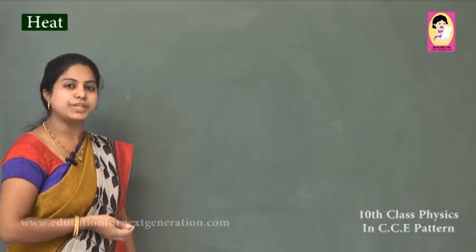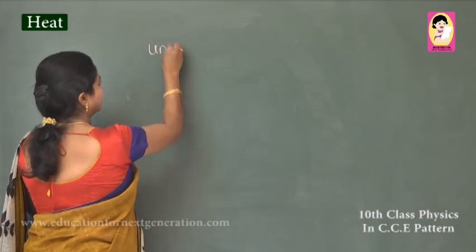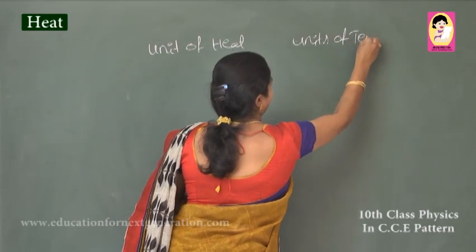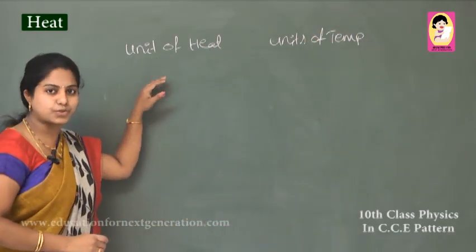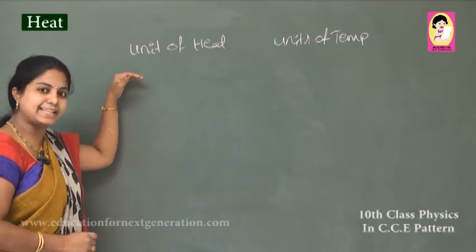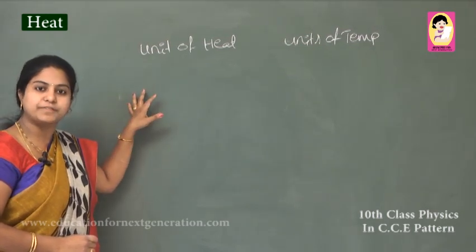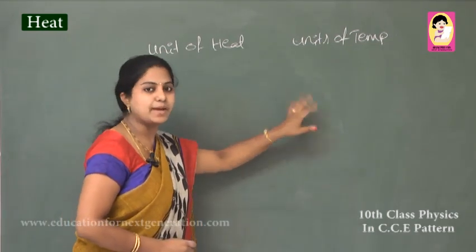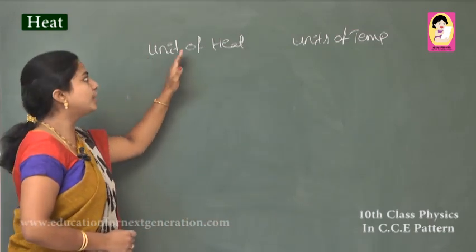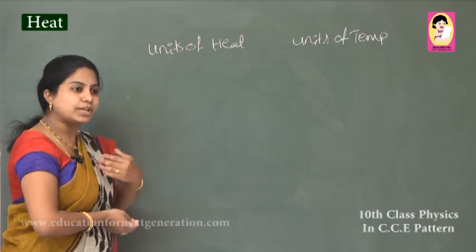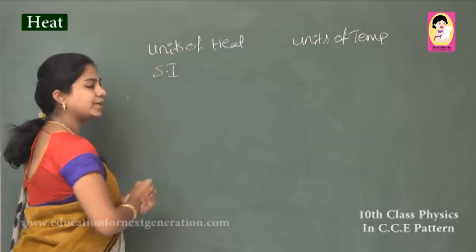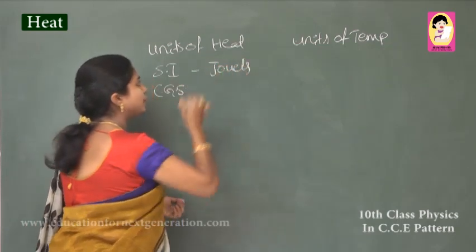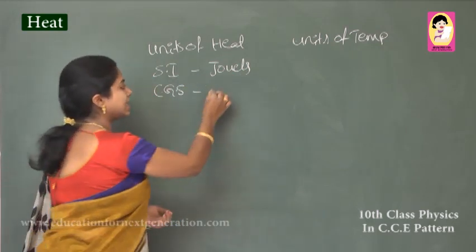Next, let's look at the units of heat and temperature. Heat can be measured in units, just like water is measured in liters or mL. Units of heat can be given in two ways: SI units and CGS units. The SI unit of heat is joules, and the CGS unit is calories.